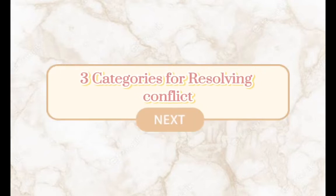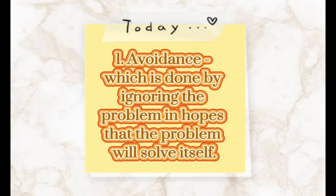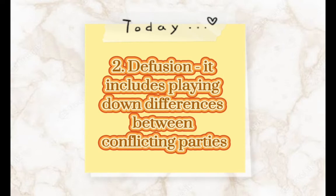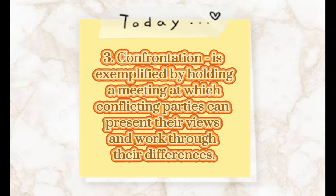Three categories for resolving conflict. One: avoidance — done by ignoring the problem in hopes that it will solve itself. Two: diffusion — includes playing down differences between conflicting parties. Three: confrontation — exemplified by holding a meeting at which conflicting parties can present their views and work through their differences.